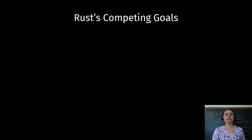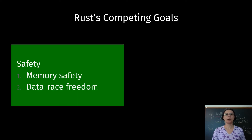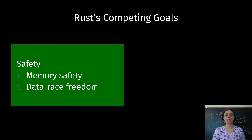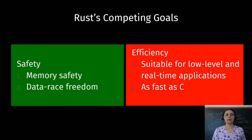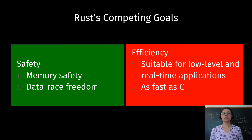Rust is a programming language designed for highly parallel system applications, such as the servo browser engine. Rust helps programmers write memory-safe and data-race-free programs using a novel type system. However, for Rust to be useful and suitable for low-level and real-time applications, it must be as fast as C.